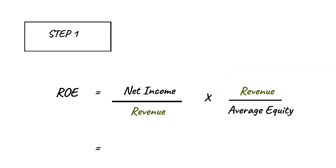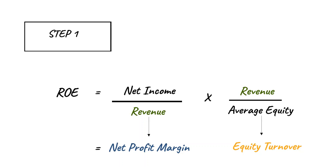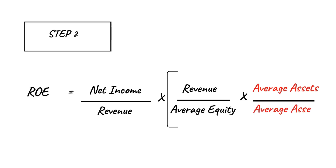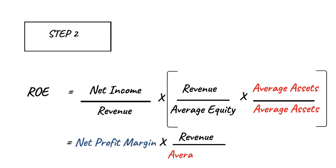Do you recognize these ratios? Net income over revenue is the net profit margin of a company. How about revenue by average equity? Since revenue is in the numerator, it must be a turnover ratio — that's right, it's the equity turnover ratio. So ROE equals the net profit margin multiplied by the equity turnover indicator. Performing the same task again, but this time multiplying the numerator and denominator of the equity turnover indicator by average assets, we get: net profit margin multiplied by revenue divided by average assets, multiplied by average assets divided by average equity.